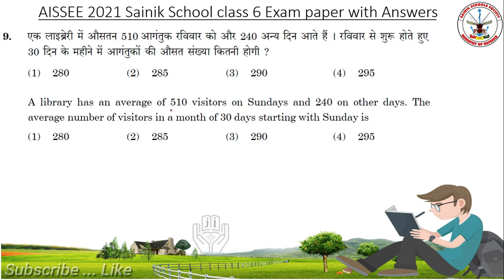Next question: A library has an average of 510 visitors on Sundays and 240 on other days. The average number of visitors in a month of 30 days starting with Sunday is. Answer: 285.